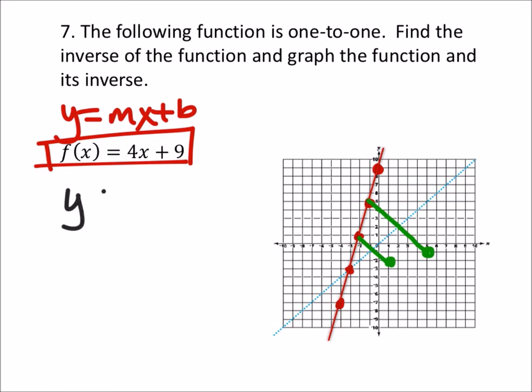Going back to the equation, we got y equals 4x plus 9, but I'm going to replace the y and the x values with each other, so this is now x and y, and I'm solving for x. So I would subtract 9 from both sides.